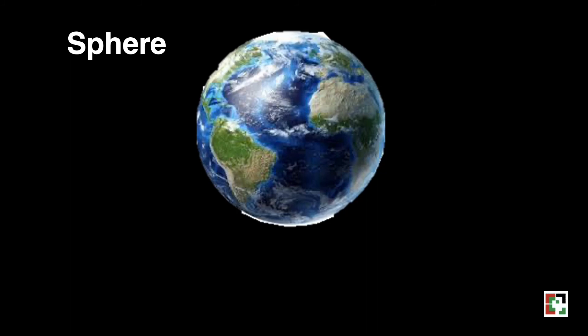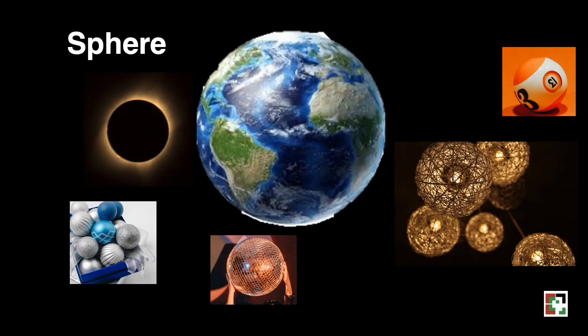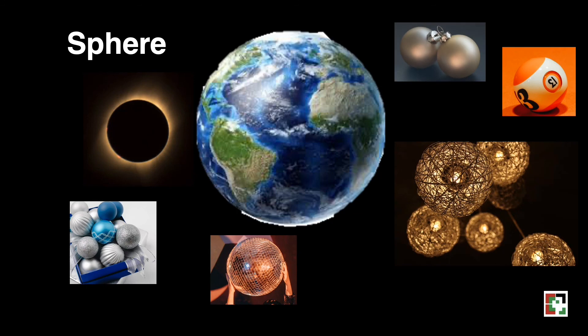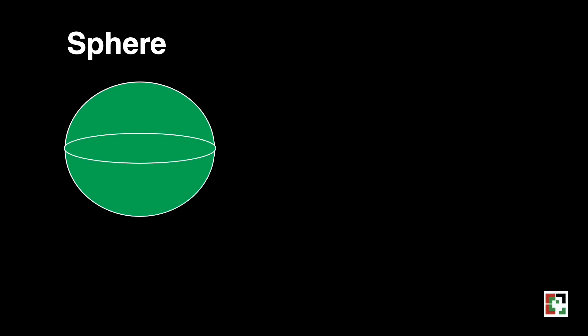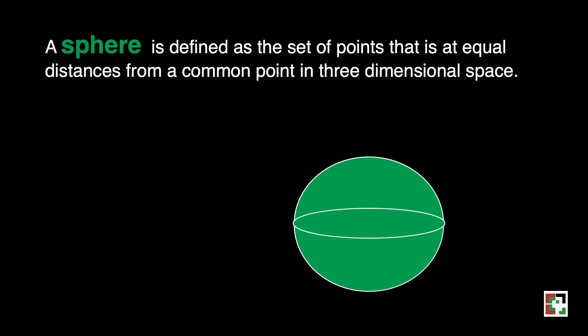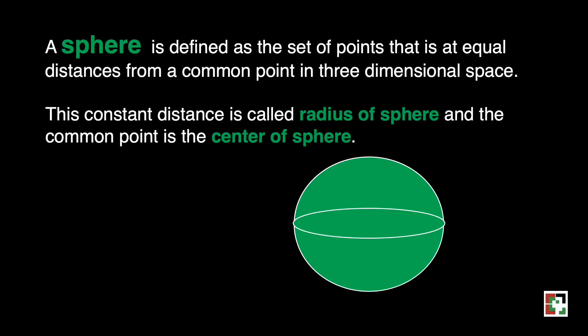We also have the sphere. Our Earth is an example of a sphere. A sphere is a solid that is absolutely round in shape, defined in three-dimensional space as the set of points at equal distances from a common point. This constant distance is called the radius of the sphere, and the common point is the center of the sphere.